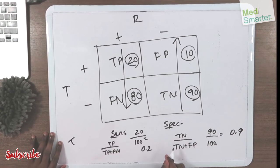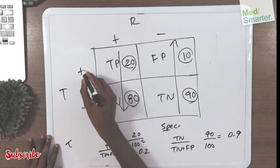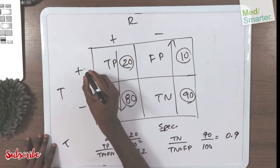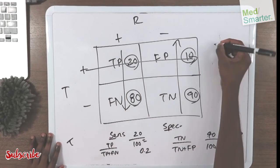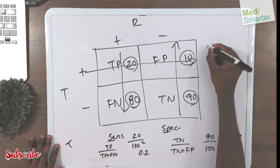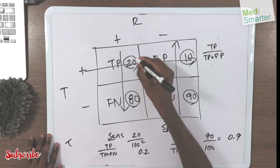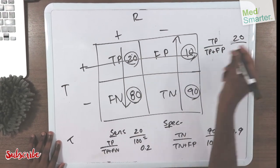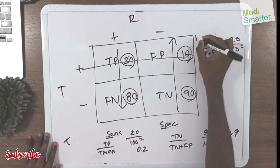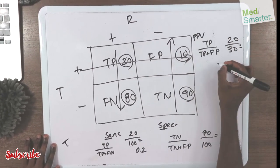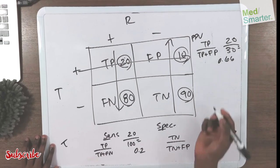Now for positive predictive value, you're calculating how effective the test is, go straight horizontal. Remember the trues are always on top. So true positive divided by true positive plus false positive: 20 divided by 20 plus 10 is 30, equals 0.66.